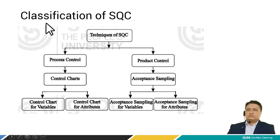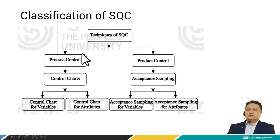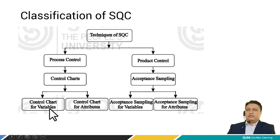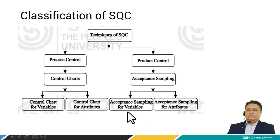Now let's see the classification of statistical quality control. The technique of statistical quality control can be classified as process control and product control. Process control can be further classified as control charts, and control charts may be variable or attribute. Product control can be classified as acceptance sampling, which may also be further classified as variable and attribute quantity.